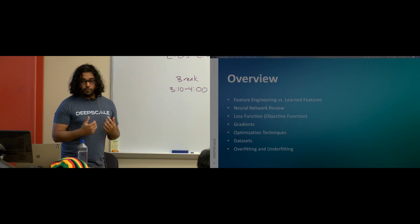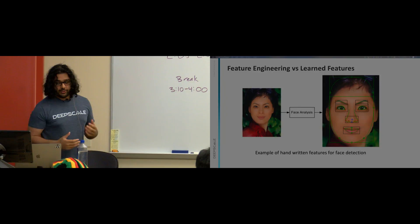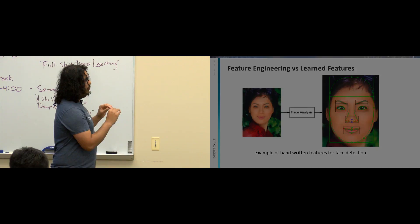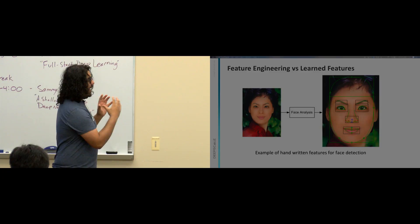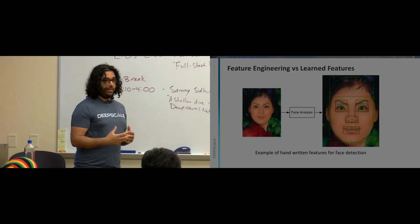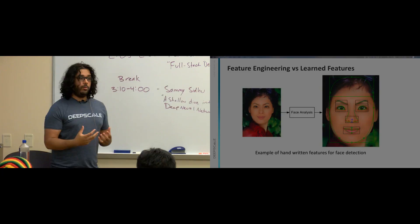Let's go into feature engineering versus learned features. Here's a face. If we wanted to build a face detector, the prior art would have been to actually build feature detectors for each portion of the face — an eye detector, an eyebrow detector, a nose detector, mouth, lips, forehead, T-zone, all of that. You'd have someone who's very good at coding and computer vision learn a lot about a face, then assemble an ensemble of features to make a face detector.